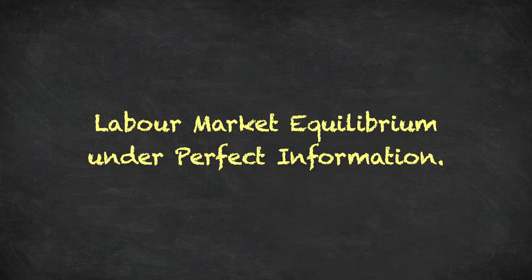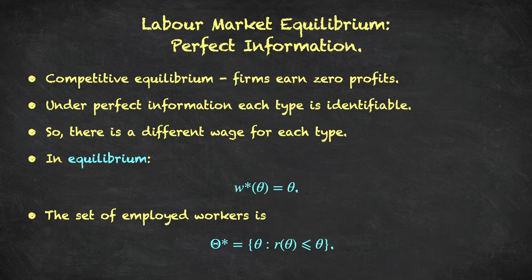So that's the very simple model. We have many identical firms — risk-neutral profit maximizers that maximize expected profits — and on the supply side a whole interval of possible worker types denoting productivity, uniformly distributed from theta-underline to theta-overline. Let's first consider the case of perfect information.